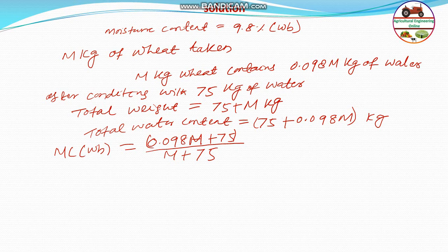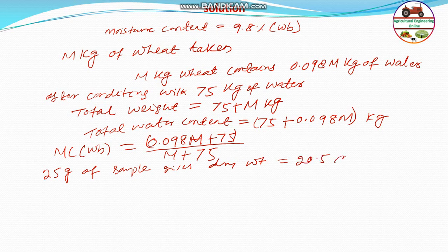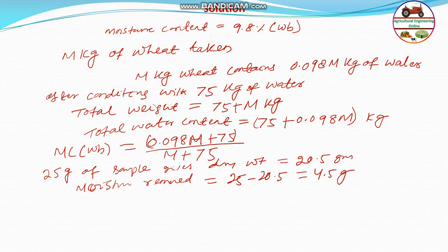From this conditioned wheat, a 25 gram sample is taken and bone-dried at 130 degree Celsius for one hour. The given dry weight or bone-dried weight is equal to 20.5 gram. Therefore, the moisture removed is equal to 25 minus 20.5, that is 4.5 gram. That means 25 gram of wheat contains 4.5 gram of moisture content.